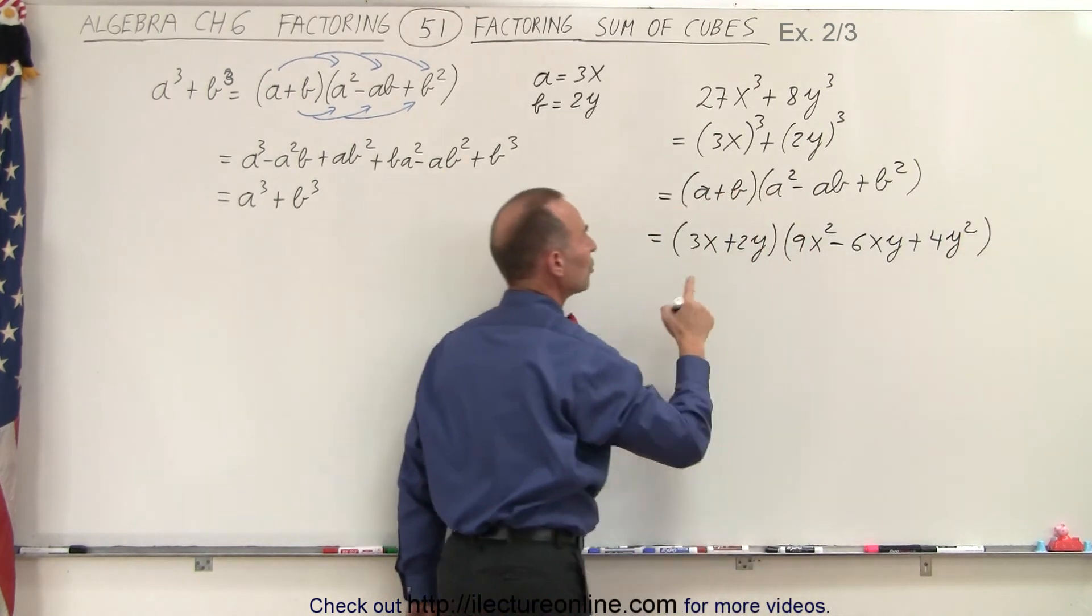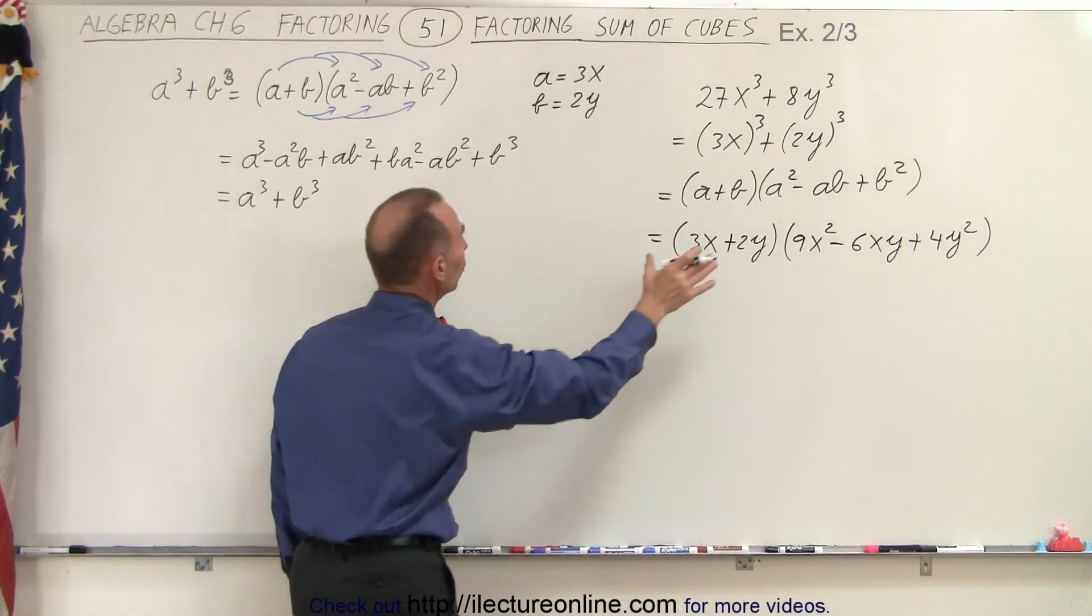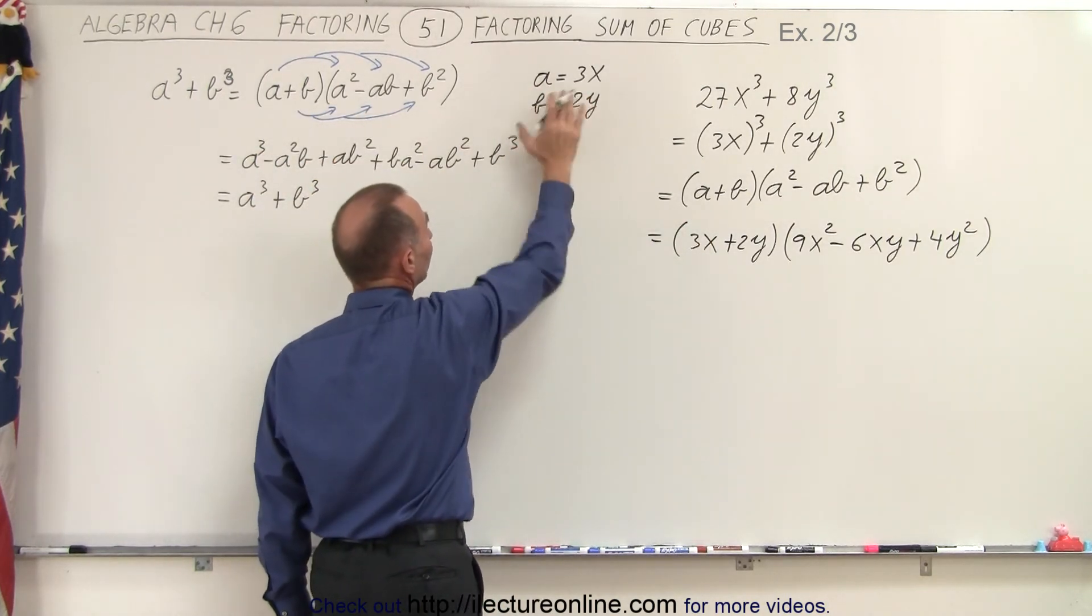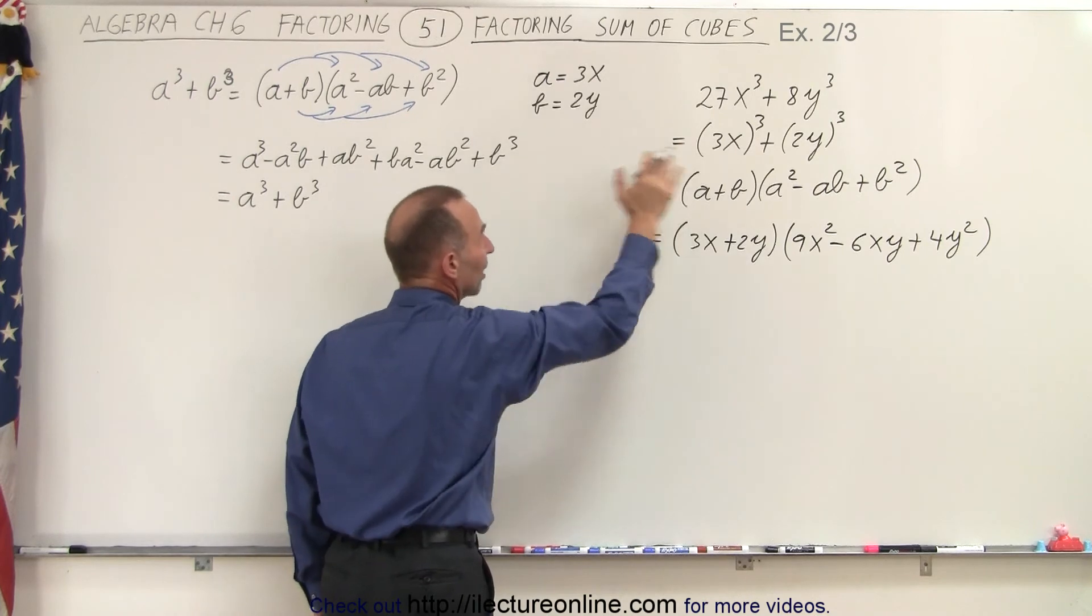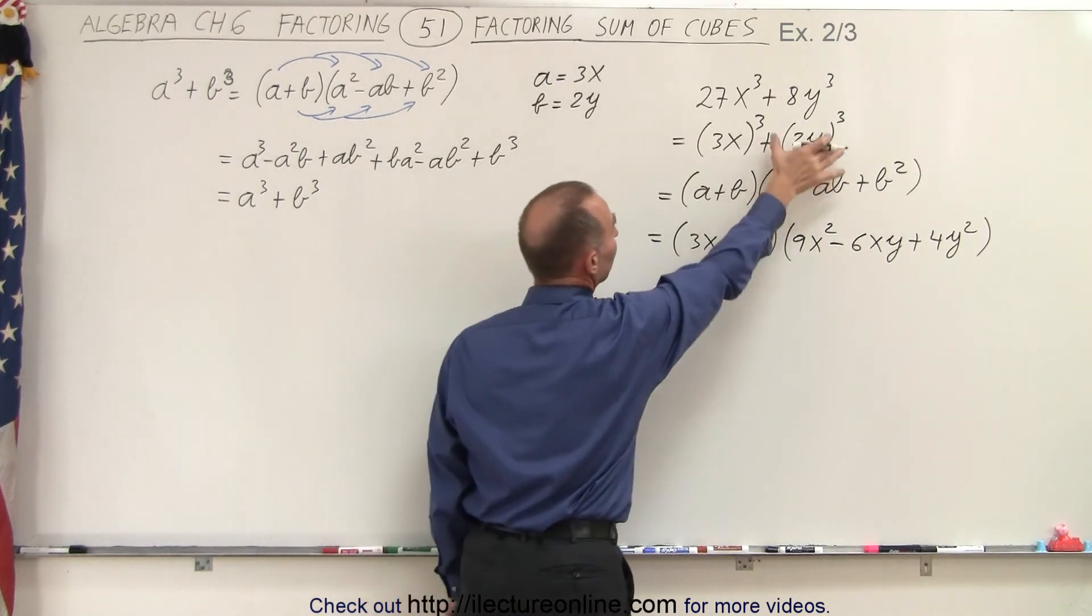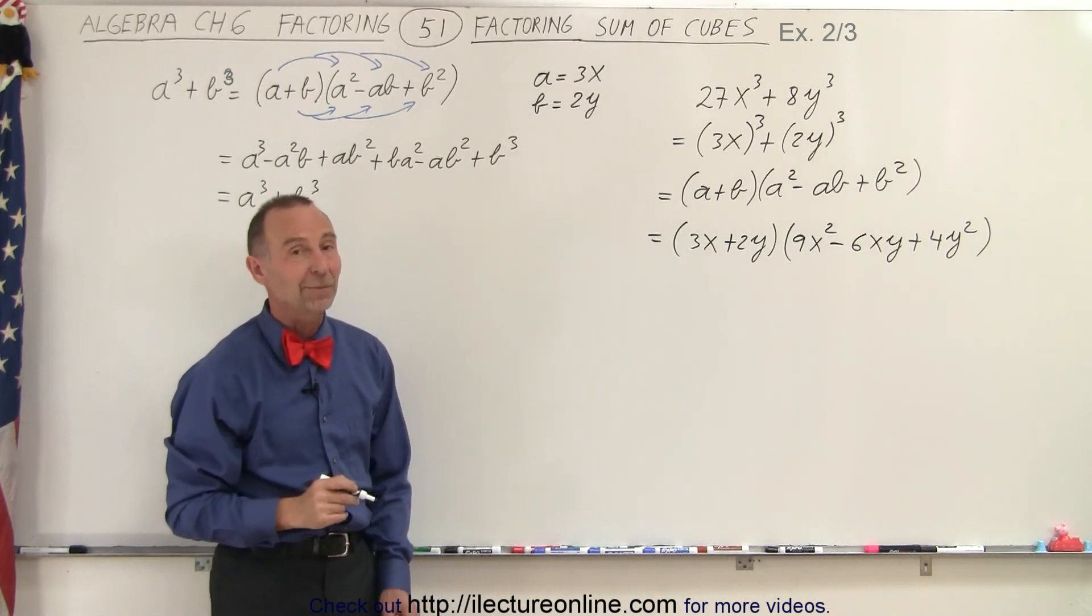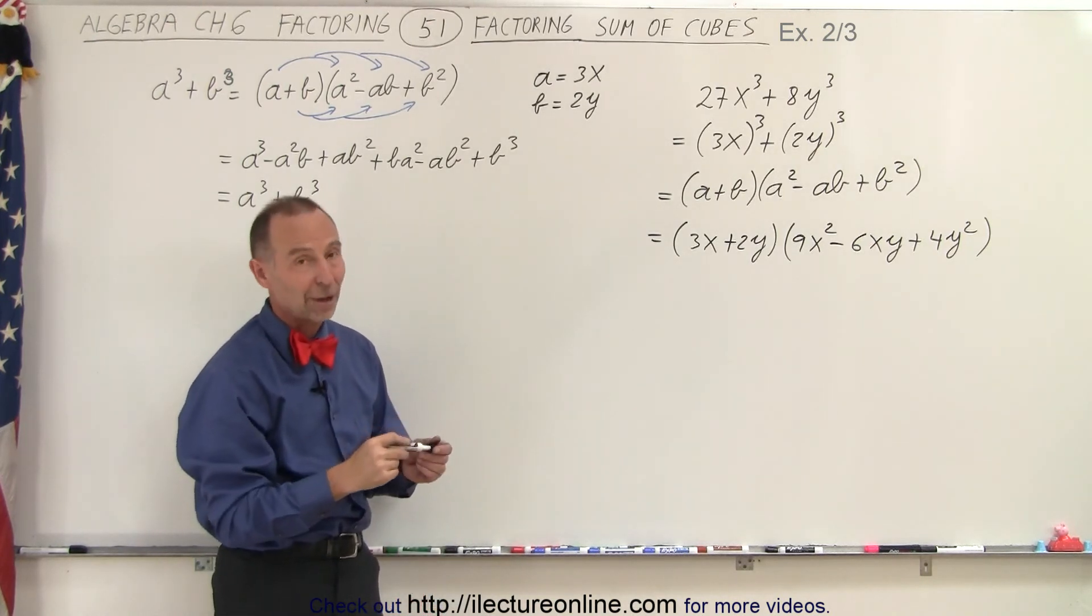And notice when you use that technique, when you match it to the general form of a cubed plus b cubed and you realize what a is equal to and b is equal to in your example, once you've written it in this format, then it's a lot easier to factor it, and you're a lot less likely to make a mistake. And that is how it's done.